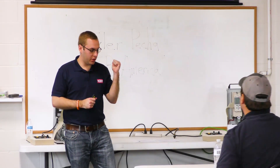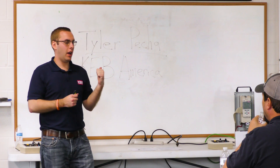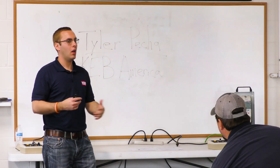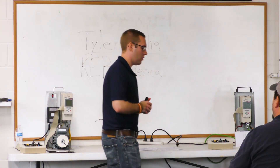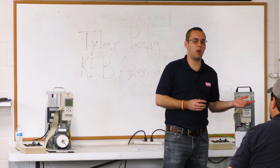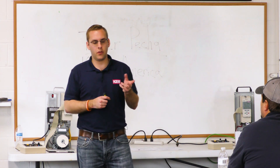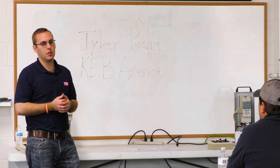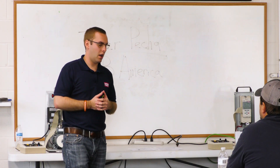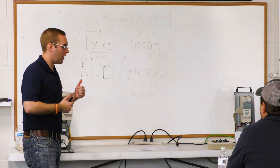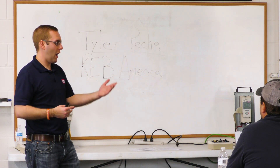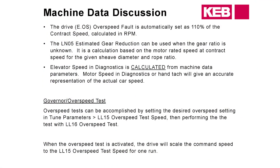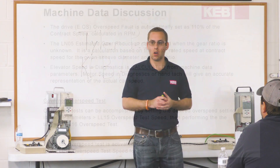For the overspeed test, we have a tune parameter set just for the governor overspeed test. What that allows you to do is avoid changing any parameters — so if you're running digital or binary speed control, you wouldn't have to change the gear reduction ratio to trick the drive into running faster. You would go to LL15 under the tune parameters and start an overspeed test. What that does is automatically bypass the 110% threshold in the drive, allowing you to overspeed the car for one run.